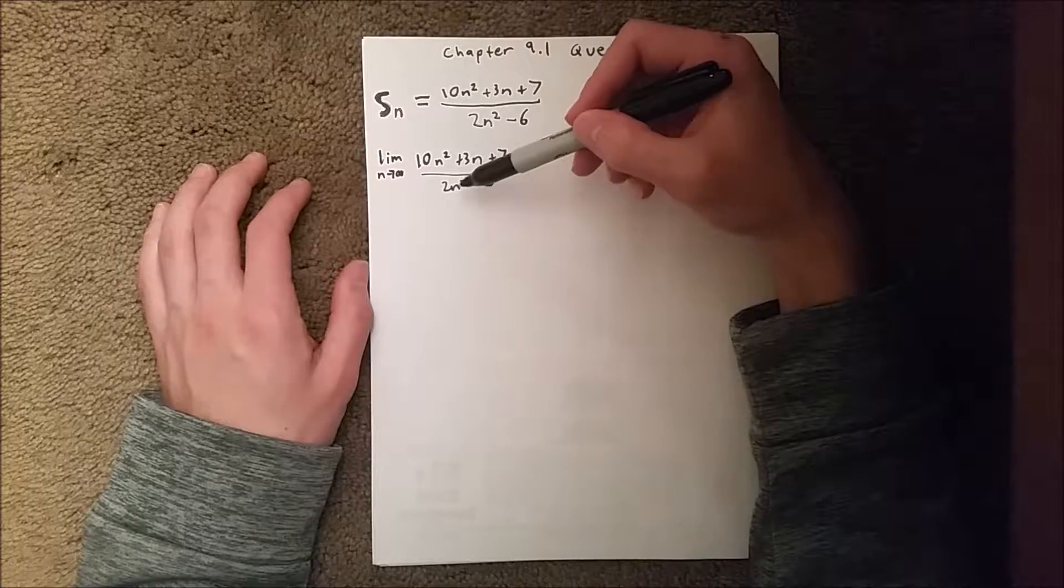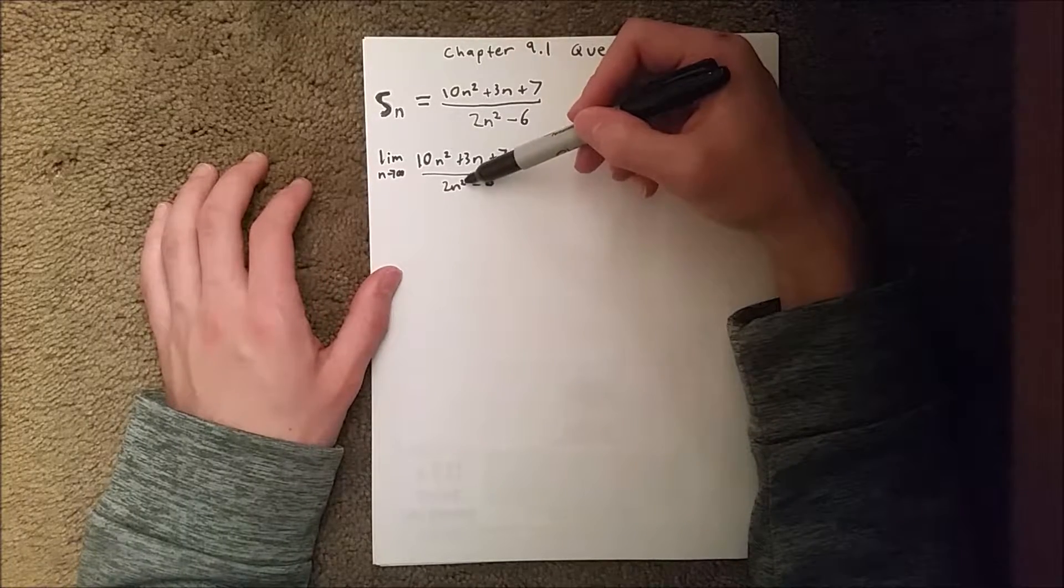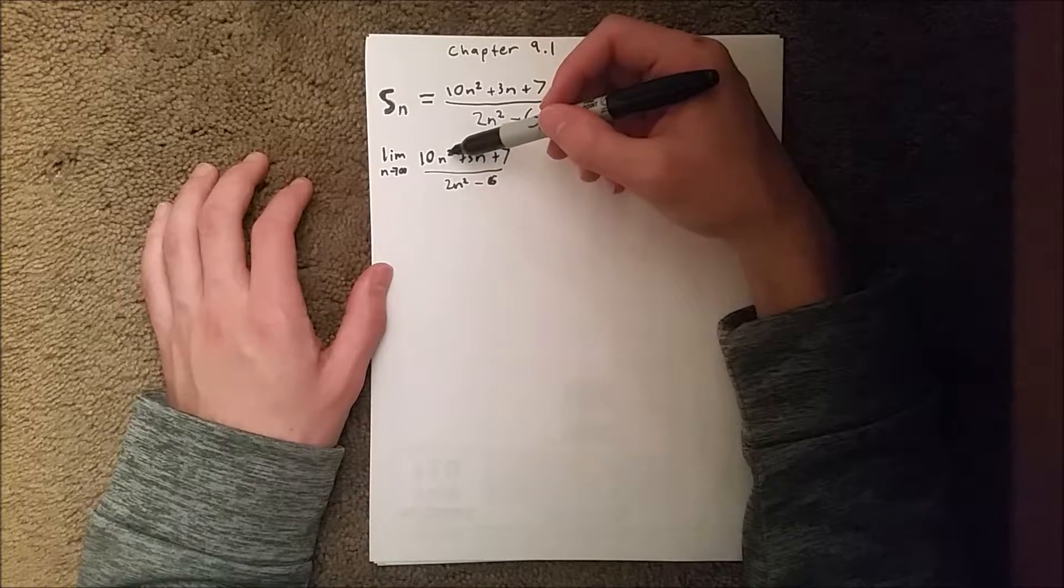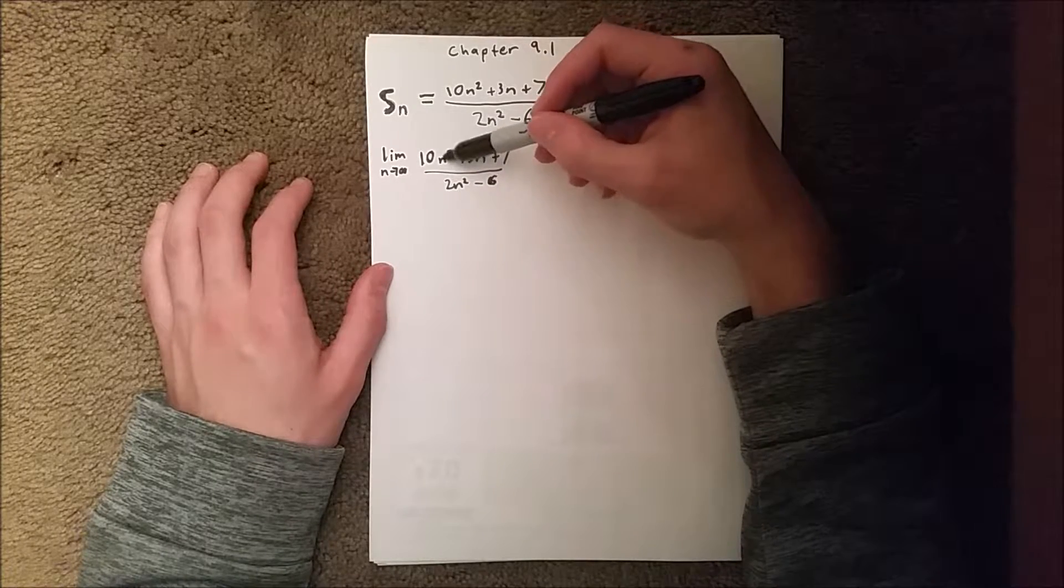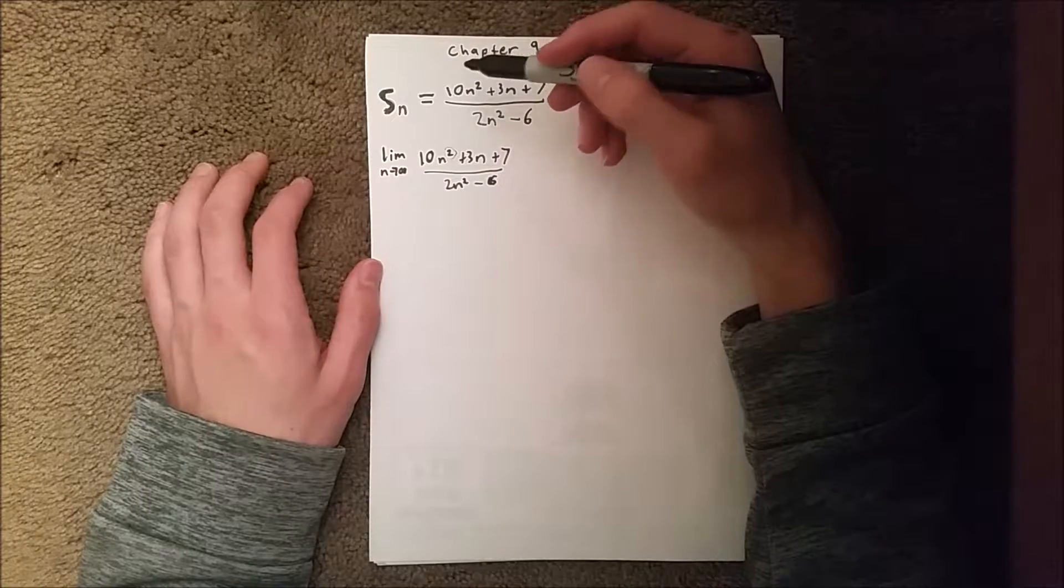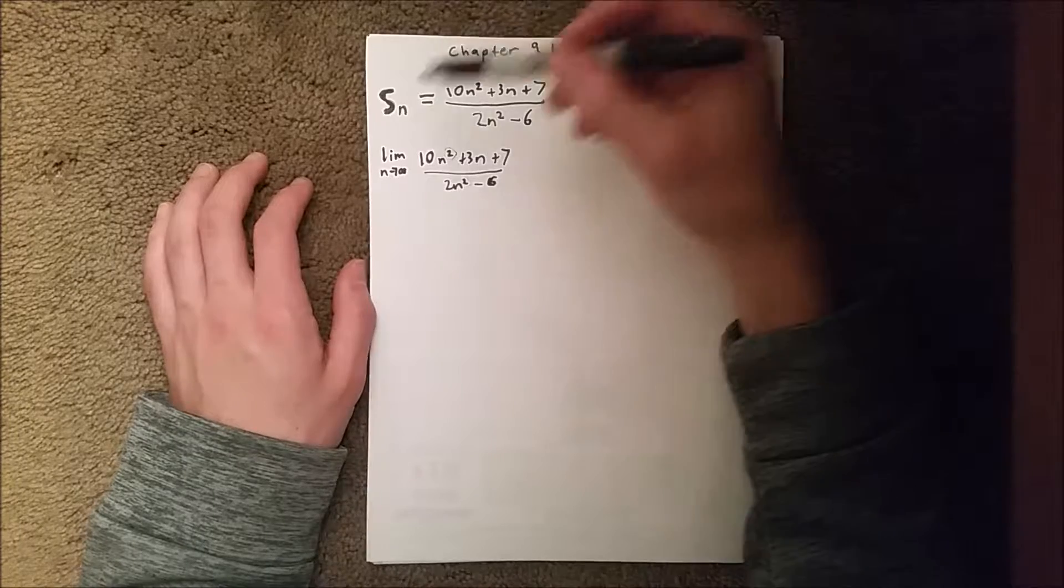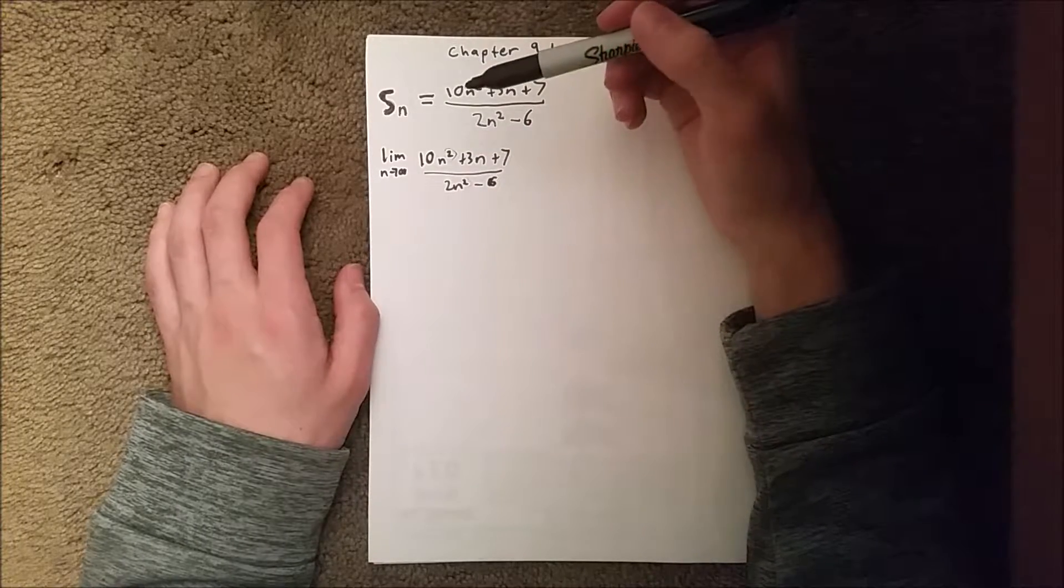Now this question is actually a special case because if you notice the exponential degree of the numerator in this case is 2—the greatest degree is 2 in the top and 2 in the denominator—which means that the limit as n goes to infinity is actually going to equal the coefficient in front of these terms.